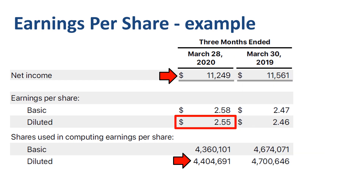What about the 4% increase in EPS? Well, that increase of 4% is actually the result of a decrease in net income year-over-year of 3%, versus a 6% year-over-year decrease in the number of shares. The net income decreased, but the number of shares decreased faster. Mathematically speaking, a decrease in the denominator that is bigger than the decrease in the numerator causes the result of the calculation — in our case EPS — to increase.